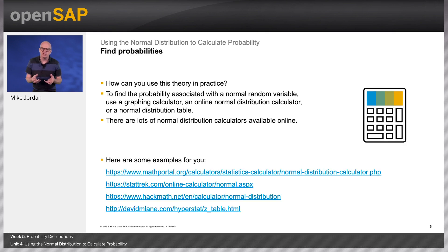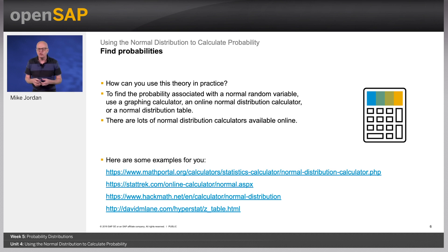How can you use this theory in practice? To find the probability associated with a normal random variable, use a graphing calculator, an online normal distribution calculator, or a normal distribution table. There are lots of normal distribution calculators available, and there are some links given so you can choose one for yourself. You are now going to see some simple example calculations.